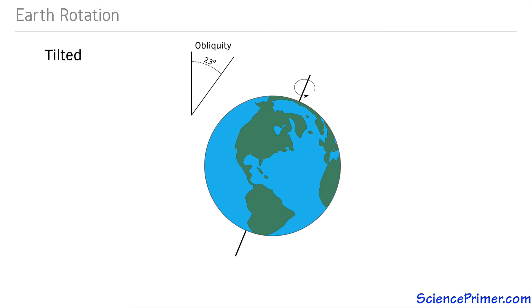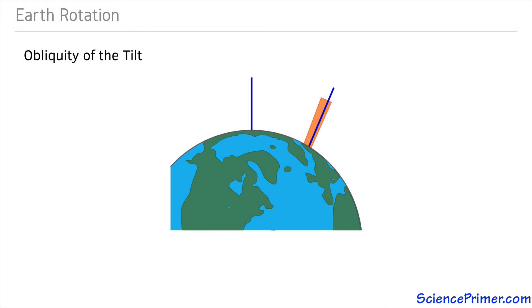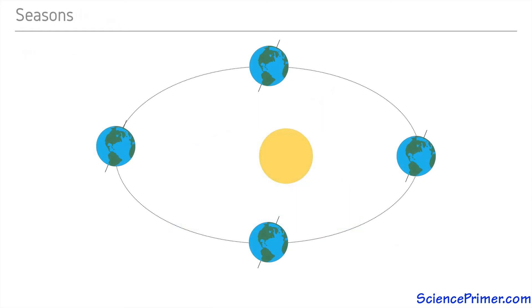This is called the obliquity of the tilt. The obliquity of Earth's tilt changes with time varying between 21.1 and 24.5 degrees over a 41,000 year cycle. This 23 degree tilt in the angle of the Earth's rotation relative to the plane of its orbit around the sun causes the seasons.